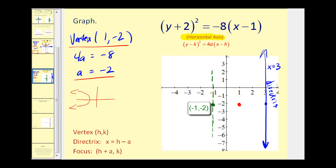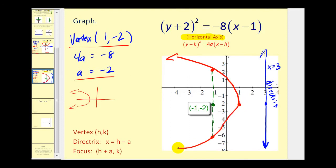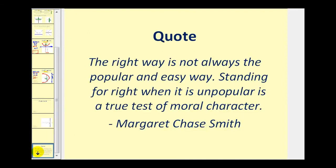The latus rectum has a length of 8 units, so we sketch a segment from 4 units above to 4 units below the focus. The endpoints of this segment are two additional points on the parabola. Our parabola passes through these three points and opens to the left. That will do it for this video. In the next video, we'll talk about how to graph parabolas in general form and review the major components. Thank you for watching.